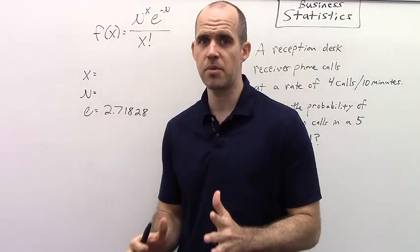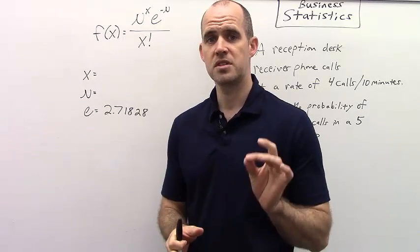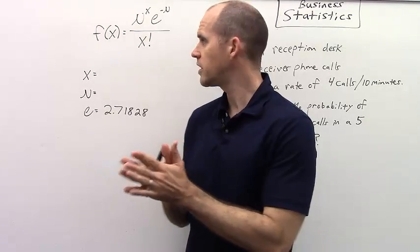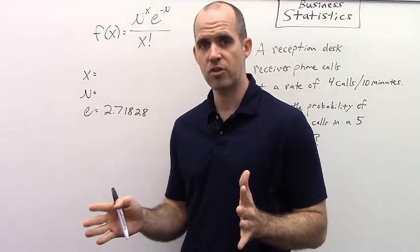This is still a discrete probability distribution where we're looking for a specific value, but it's a little bit different from the binomial or the hypergeometric in that we're looking for the probability of an occurrence within a given time interval.